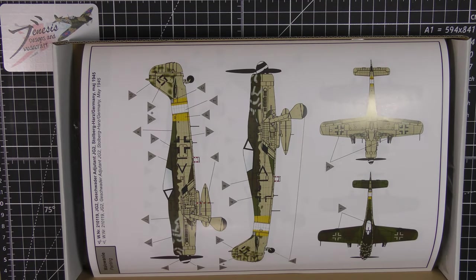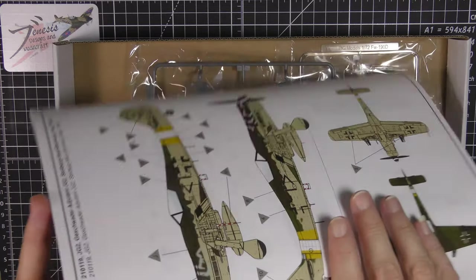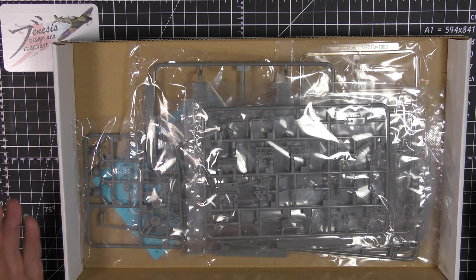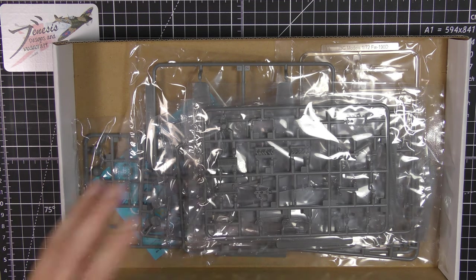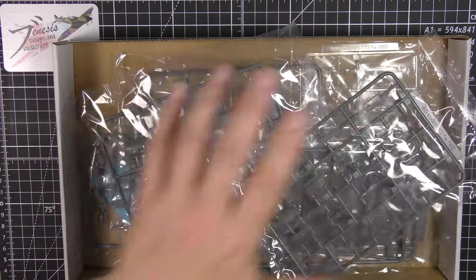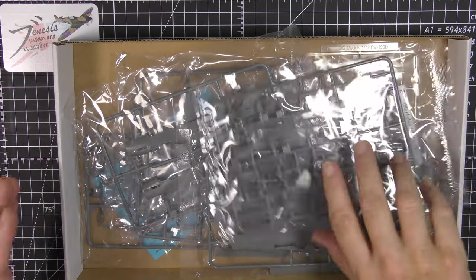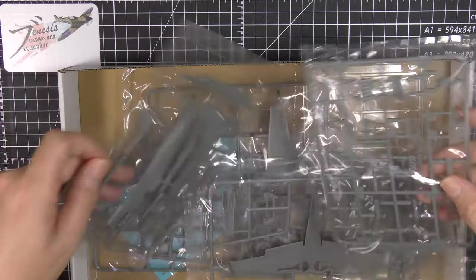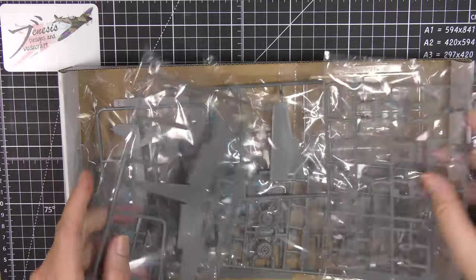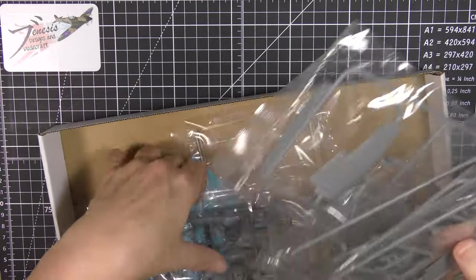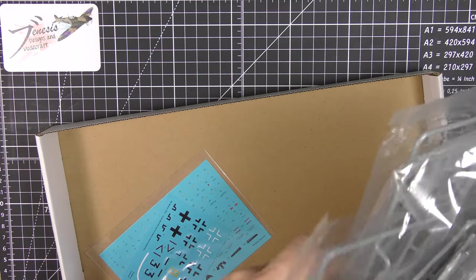IBG models are from Poland, fairly new on the scene. Most of the releases I've seen from them previously have been vehicles, so it's nice to see them branching out into aircraft. What you should know straight away is there are a million tiny screws in this quite large box for a small model, and there are a lot of different screws. Anyway, let's get in there and have a look at what we've got.